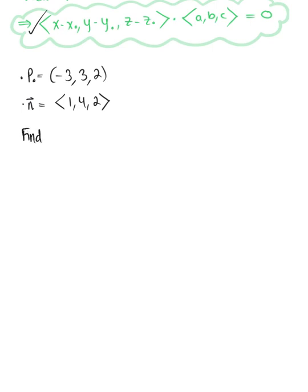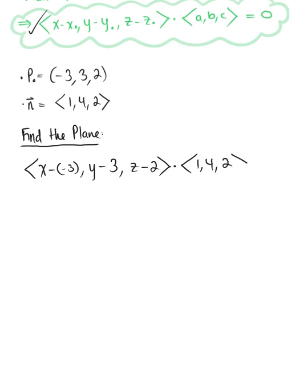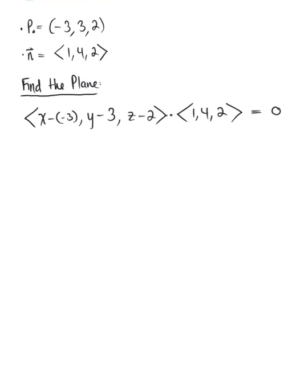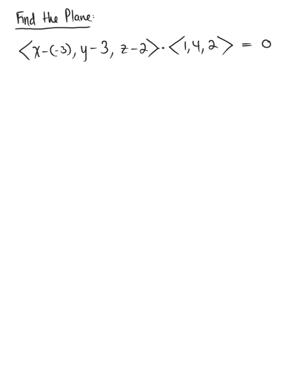Find the plane. This is going to be ⟨x-(-3), y-3, z-2⟩ dotted with the normal vector ⟨1, 4, 2⟩. Because these two vectors are normal, their dot product equals zero. We're ready to perform the dot product and find the equation.